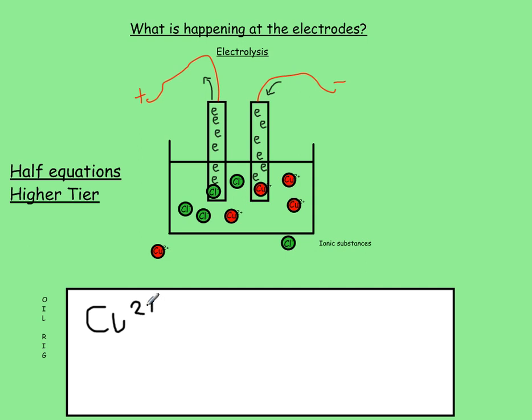Now if they've got a charge of +2, that means they've lost two electrons. We need to give the electrons back. We need to add two electrons to the copper, and you end up with a copper atom, with the same number of electrons as it used to have.